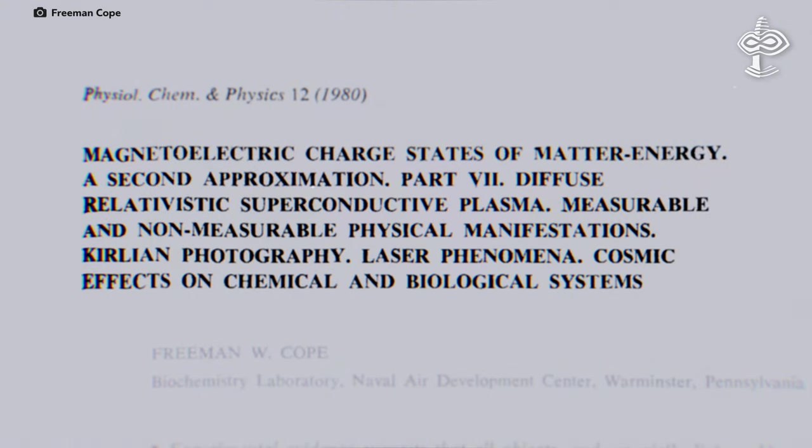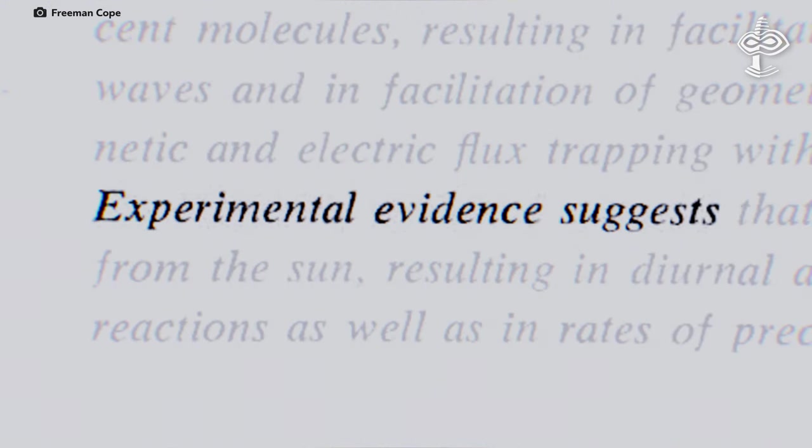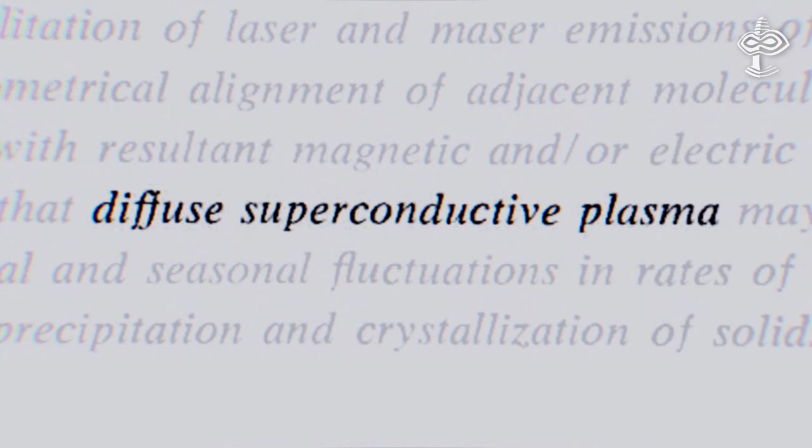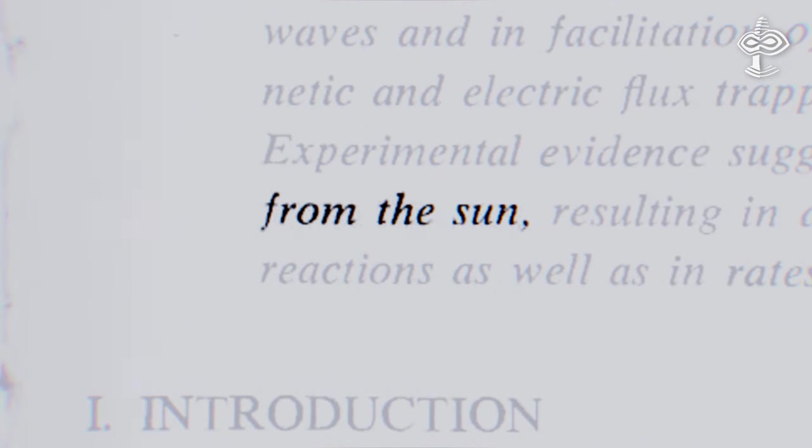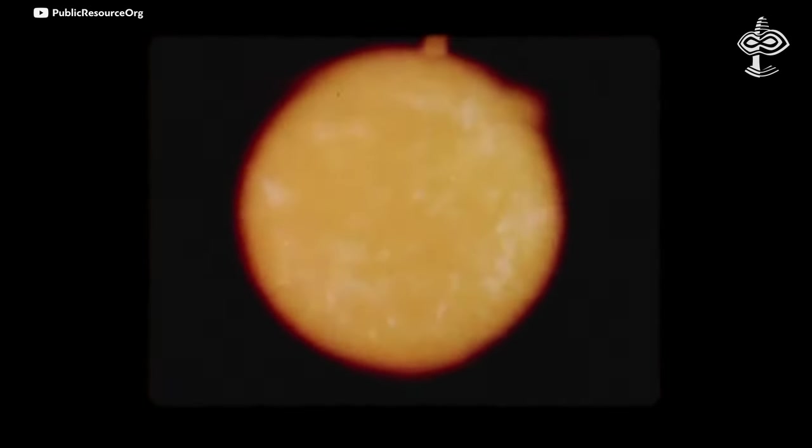Freeman Cope proposed why it might happen in the paper we discussed before. Experimental evidence suggests that diffuse superconductive plasma may reach the Earth from the Sun, resulting in diurnal and seasonal fluctuations in rates of antigen-antibody reactions, as well as in rates of precipitation and crystallization of solids from solutions.